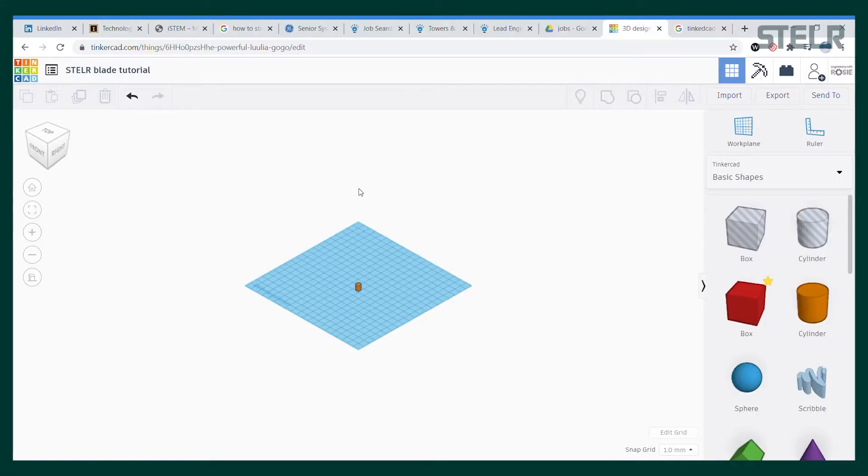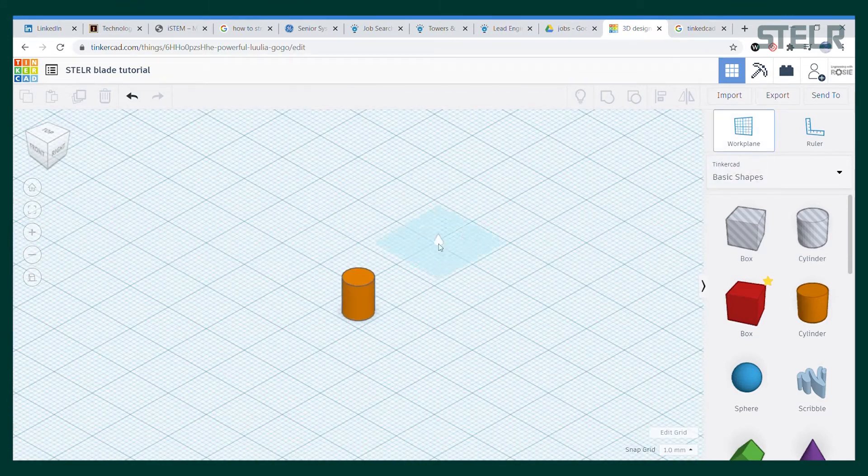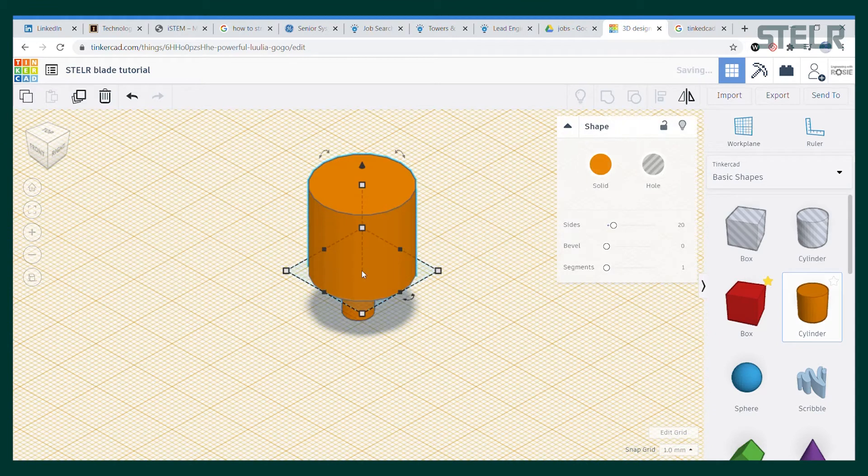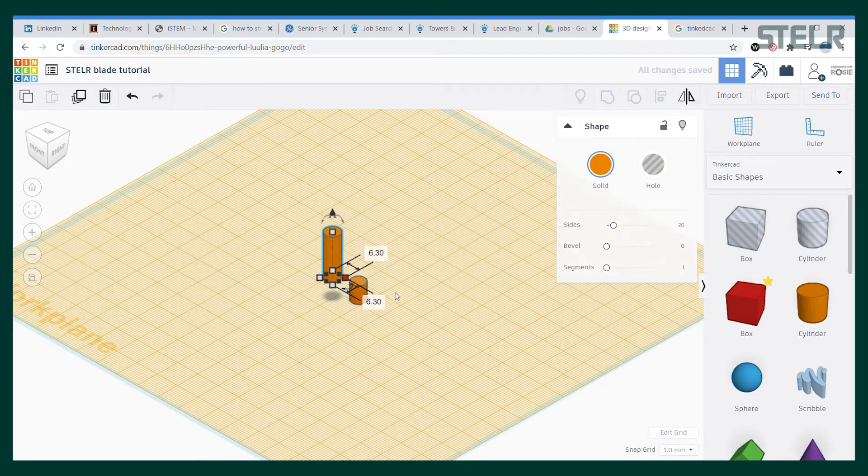Next we will add the thicker parts at either end of that cylinder. So we add a work plane to the top of our first cylinder and drag a second cylinder onto that work plane. The dimensions are 6.3 millimeters by 6.3 millimeters diameter and 1.6 millimeters length.